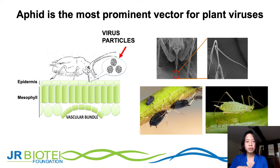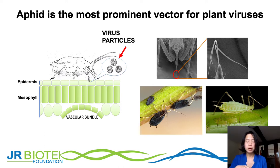Aphid is one of the most prominent vectors for plant viruses. Aphids can be found worldwide, they have a really wide host range, and they persist all year round in both temperate and tropical climates. They can survive in low and high temperatures, making them very abundant.